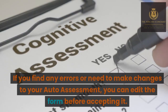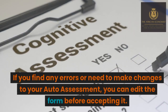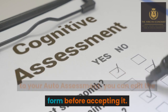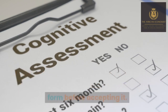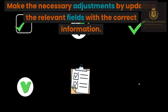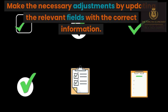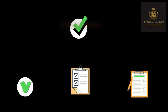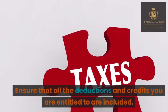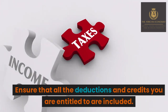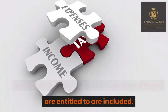Step six: make changes to your auto assessment if necessary. If you find any errors or need to make changes to your auto assessment, you can edit the form before accepting it. Make the necessary adjustments by updating the relevant fields with the correct information. Ensure that all the deductions and credits you are entitled to are included.